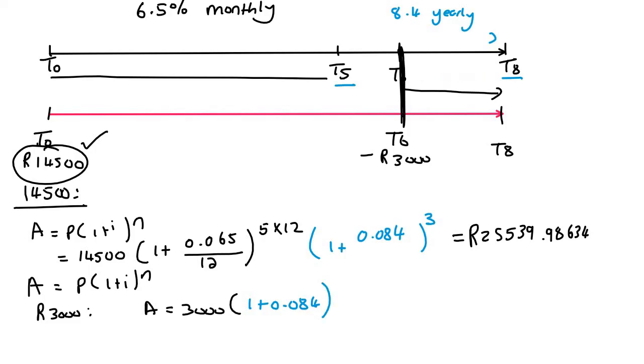And that one's only for two years. From T6 to T8 is only going to be two years. And so if we work that out, that'll give us 3,525, and don't round off once again, 0.168.